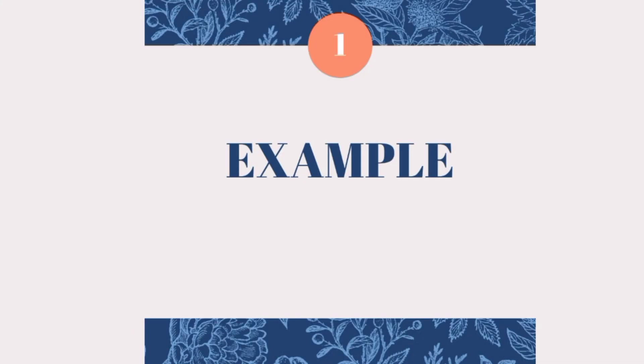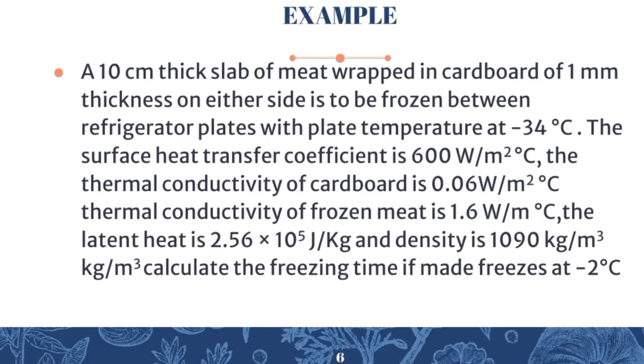Now let's understand everything with an example. A 10 centimeter thick slab of meat wrapped in cardboard of 1 mm thickness is to be frozen between refrigerator plates with plate temperature at -34°C. The surface heat transfer coefficient is 600 W/m²°C, and the thermal conductivity of cardboard is 0.06 W/m²°C.